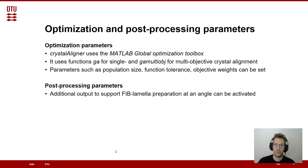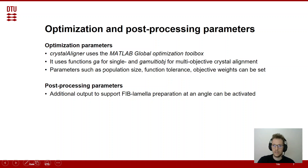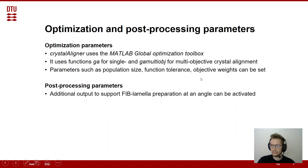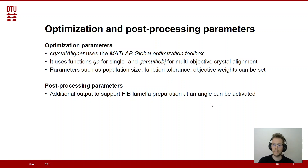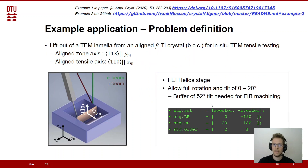There are also some optimization post-processing parameters you can specify — it's all nicely listed in the documentation. Crystal Aligner uses the MATLAB global optimization toolbox; we use the function 'ga' for single-objective and 'ga' multi-objective for multi-objective crystal alignment. Parameters such as population size, function tolerance, and objective weights can be set. There are also post-processing parameters, mostly related to additional output that can support FIB lamella preparation at an angle — you can activate or deactivate this output depending on what you use the code for.